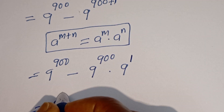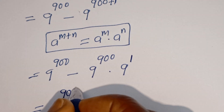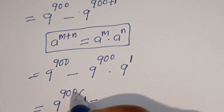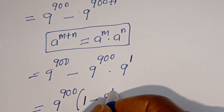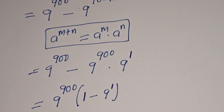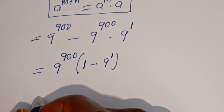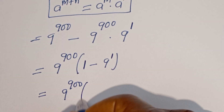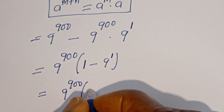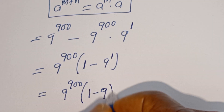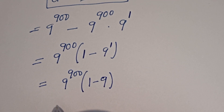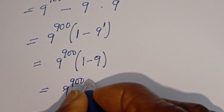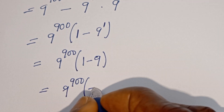Here we have 9 to the power of 900. If you divide this by this, we have 1 minus. If you divide this by this, we have 9 to the power of 1. Then this is 9 to the power of 900 bracket 1 minus 9. Because 9 to the power of 1 is 9, then this is equal to 9 to the power of 900 bracket 1 minus 9, that is minus 8.